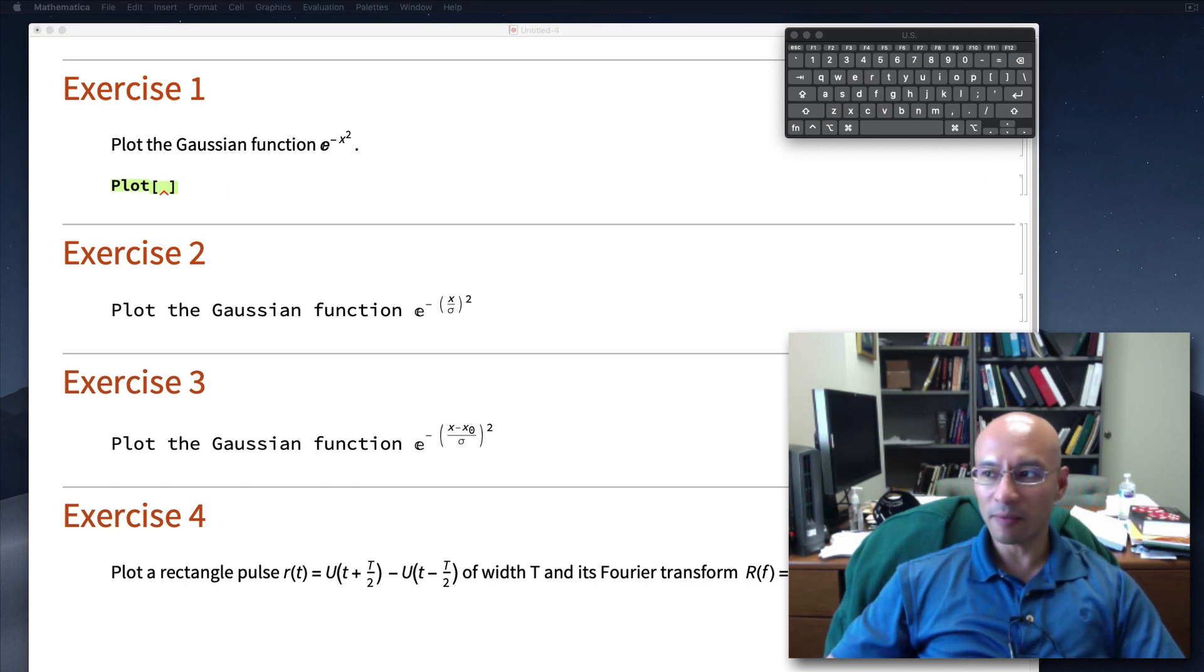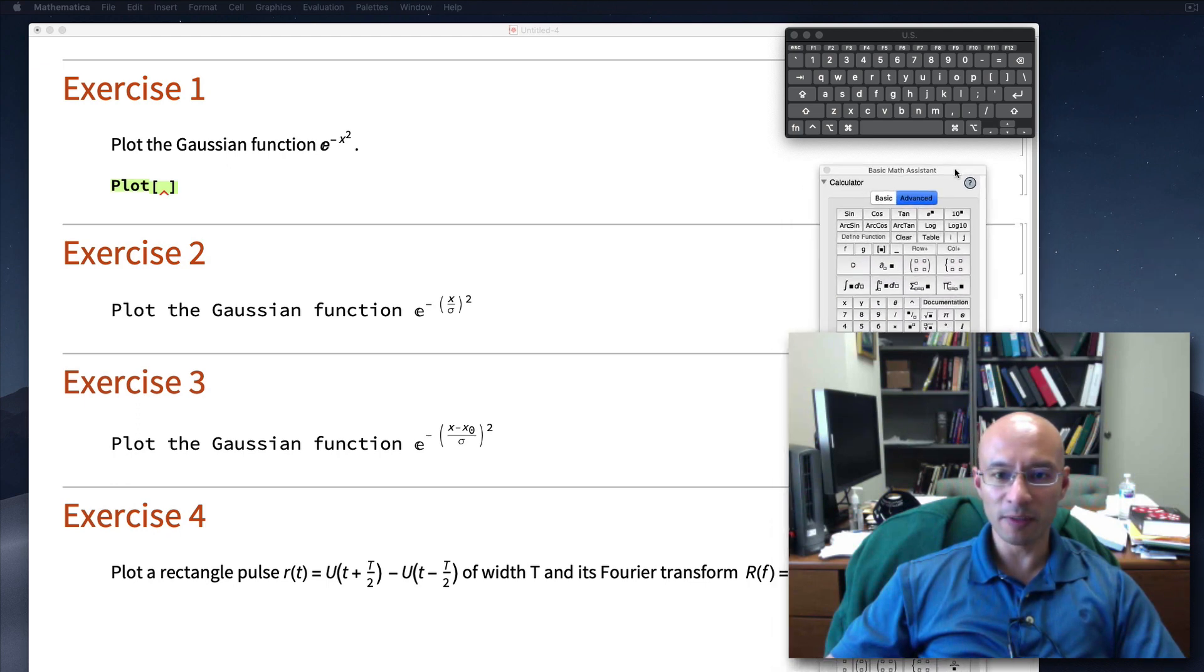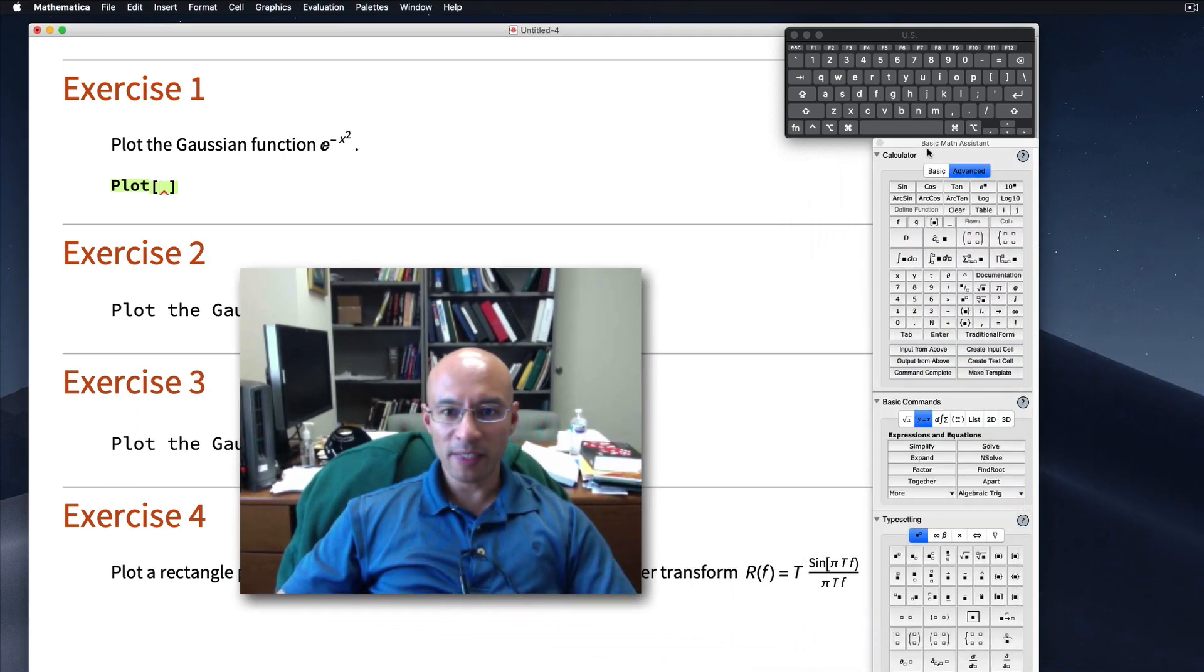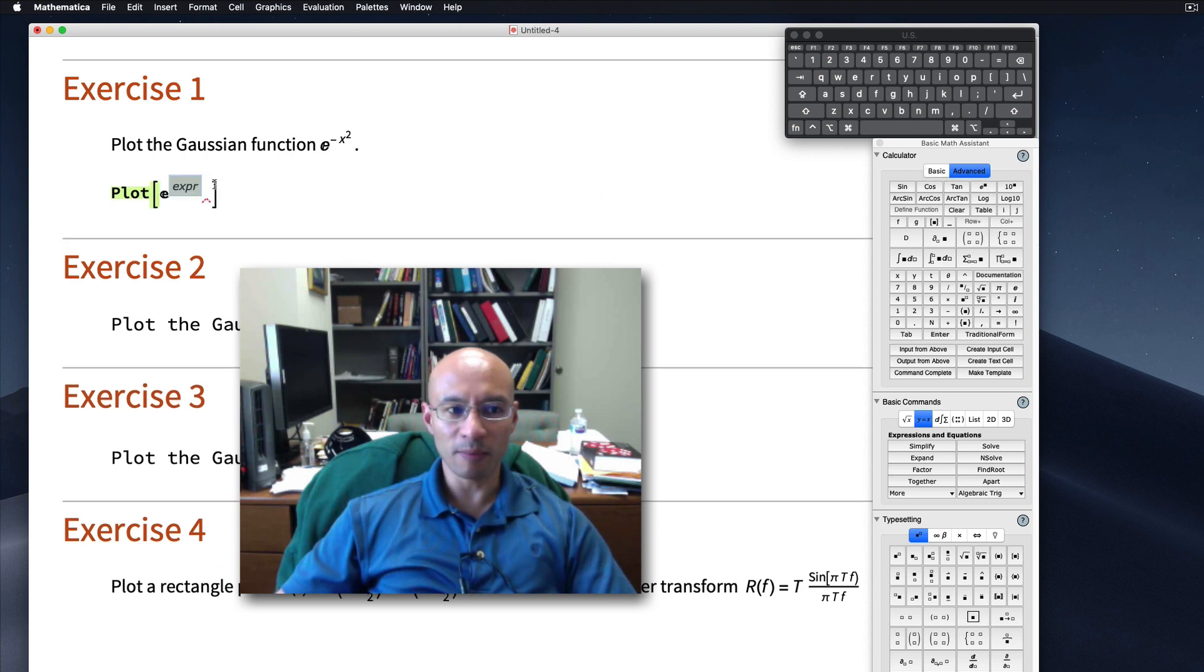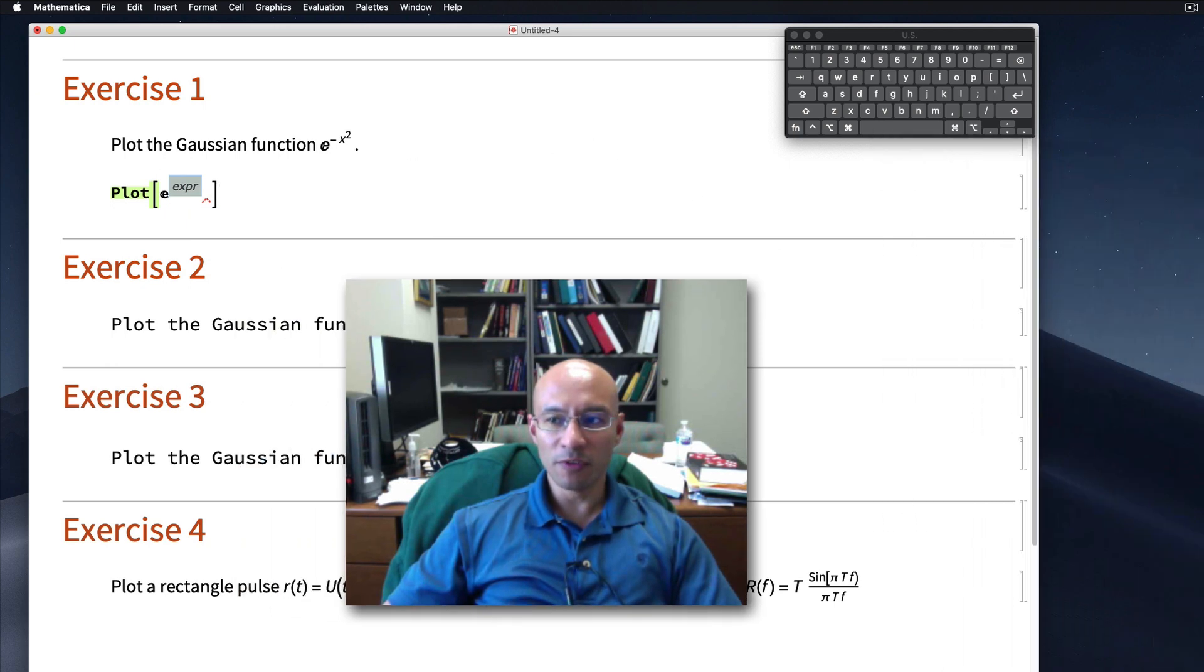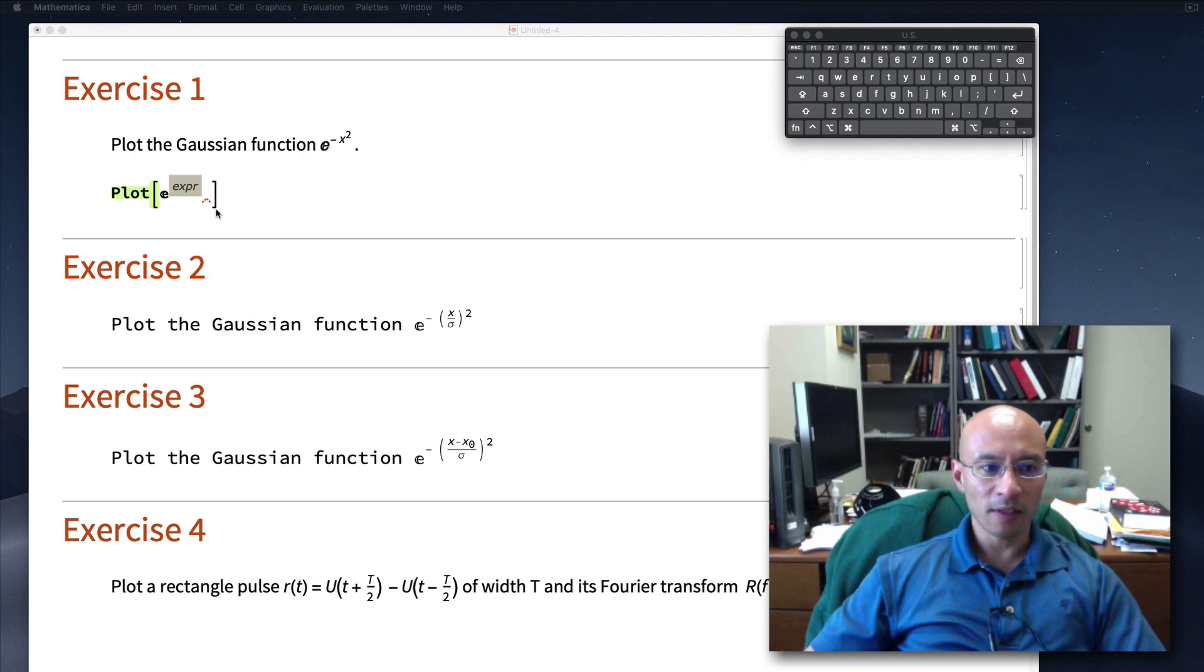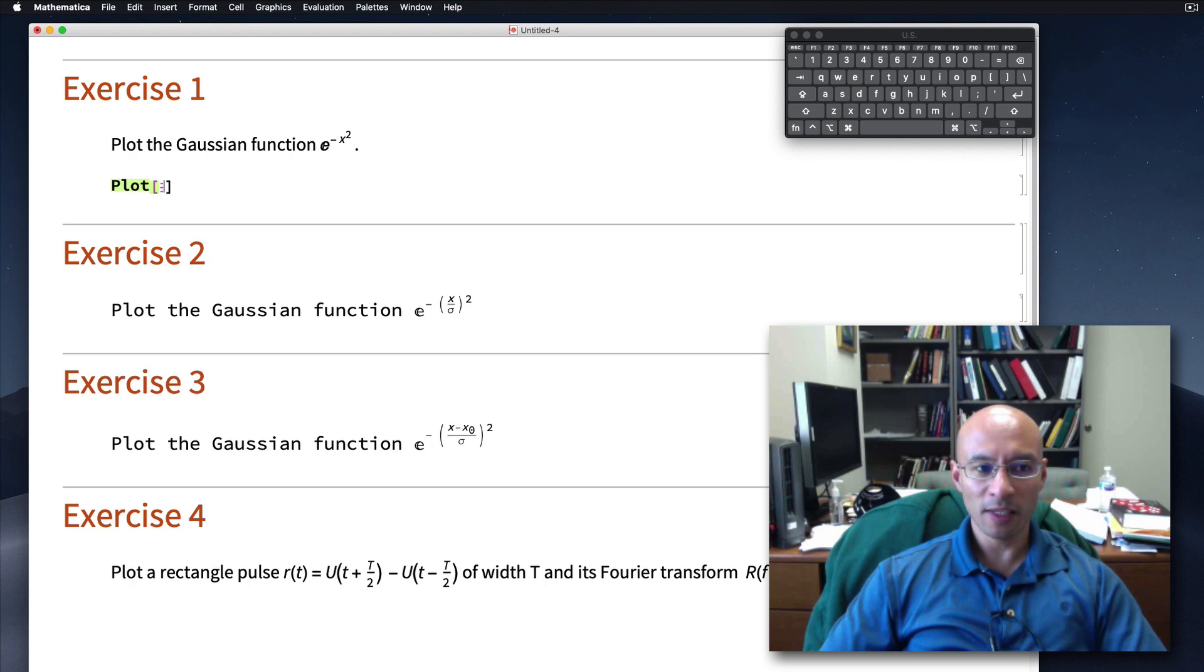One option is to get the exponential from a palette. Here's a palette. I've got the basic math assistant palette here. Under advanced, there's the exponential, which I can click and then it brings it in like this. There's another way to get the exponential. I'll move the palette aside for a moment. A way that I like is I use keyboard shortcuts. So if I type escape and then E, E, and then escape again, it gives me the exponential.